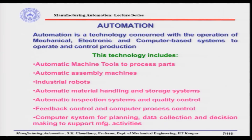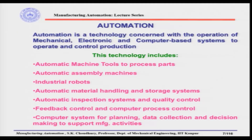Therefore, automation is a technology concerned with the operation of mechanical, electrical, and computer-based systems to operate and control production. This technology includes automatic machine tools to process parts, automatic assembly machines, industrial robots to help the manufacturing or assembly process, and automatic material handling and storage systems.